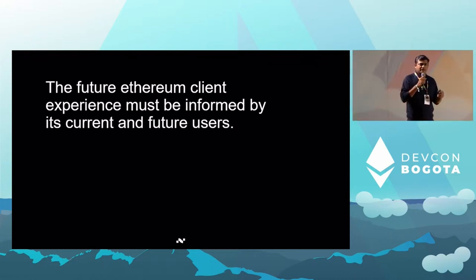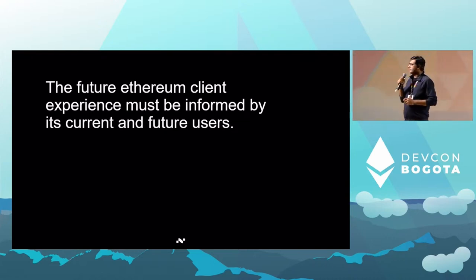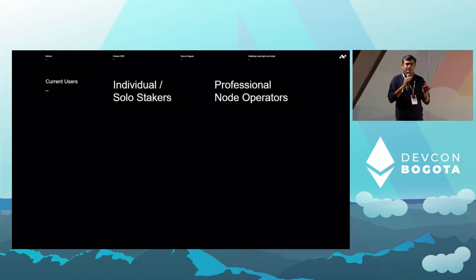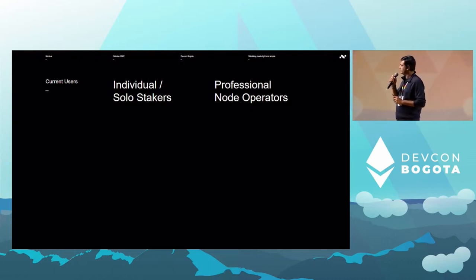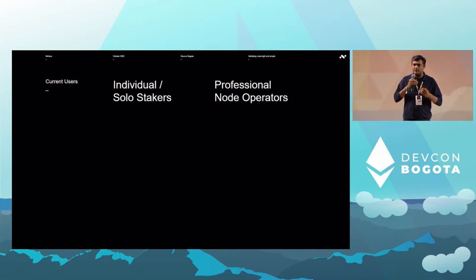When we talk about the future client experience, it needs to be in the context of who the users are — both current users and what we see the composition of the validator set looking like a year or two down the line. Our current and future users can be broadly classified in two categories: individuals, or solo stakers, and professional node operators. There are some other segments in between, but broadly you can put them in one of these two categories. We'll talk about professional node operators first, then individual users, and see what the similarities and differences are in their expectations.